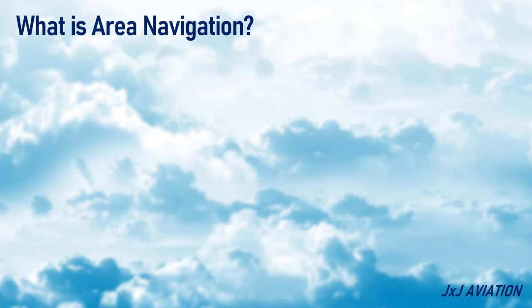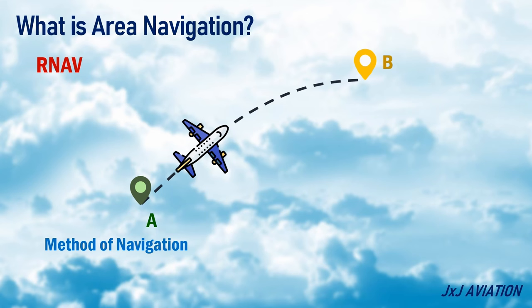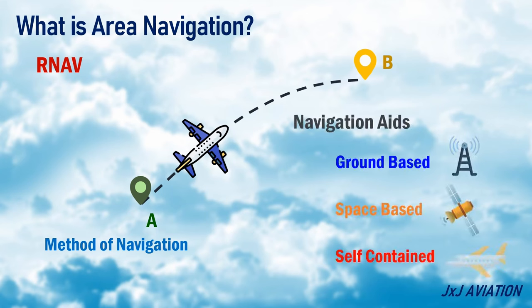What is area navigation? Area navigation, or RNAV, refers to a method of navigation which allows an aircraft to fly on a desired flight path, let's say from point A to point B. To fly on this flight path, the aircraft takes assistance of ground-based navigation aids, space-based navigation aids, or self-contained navigation aids, or a combination of these. This method of navigation comes under instrument flight rules.